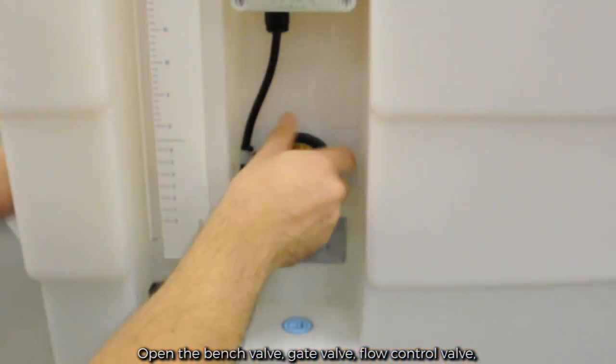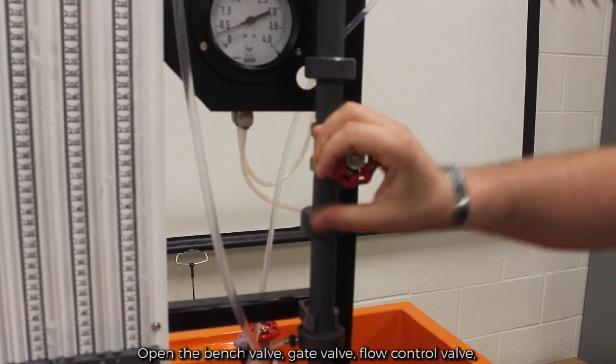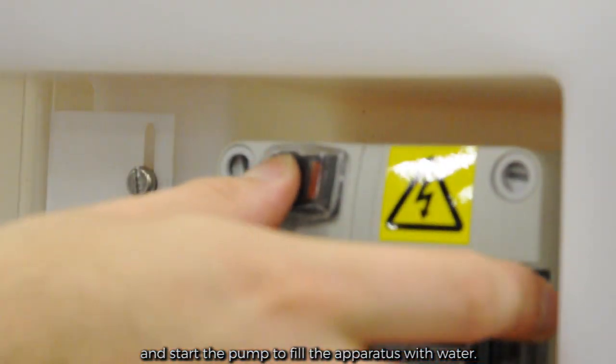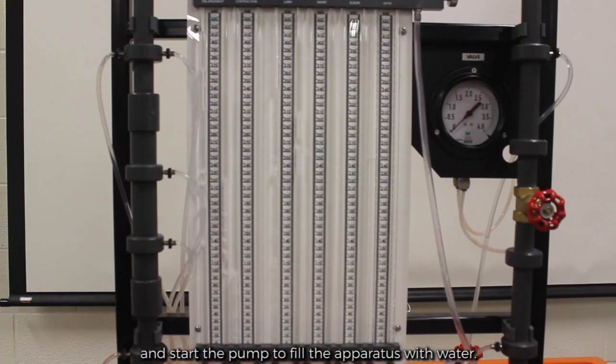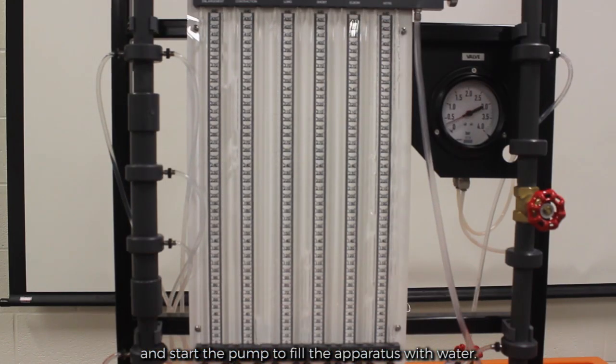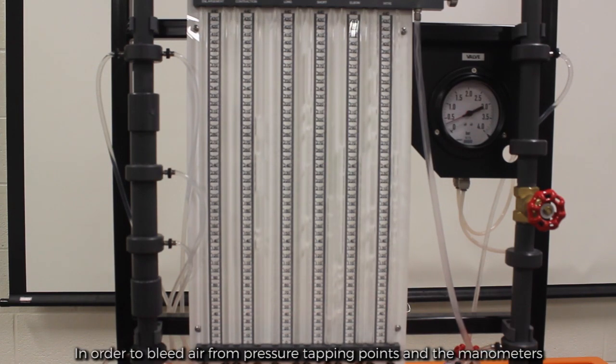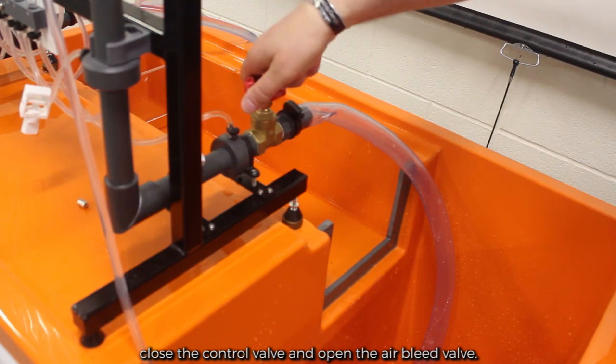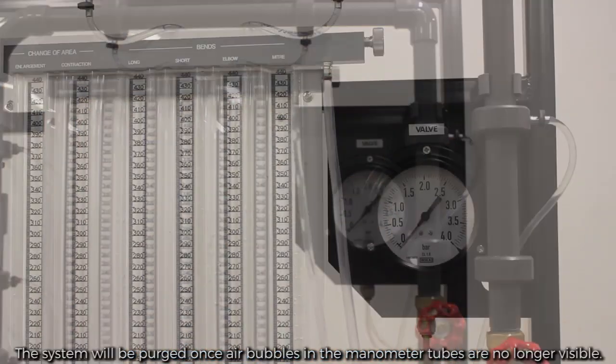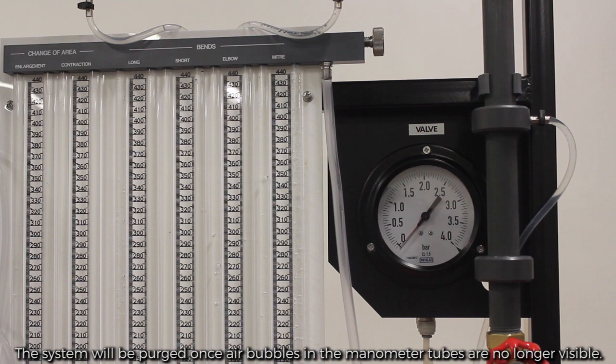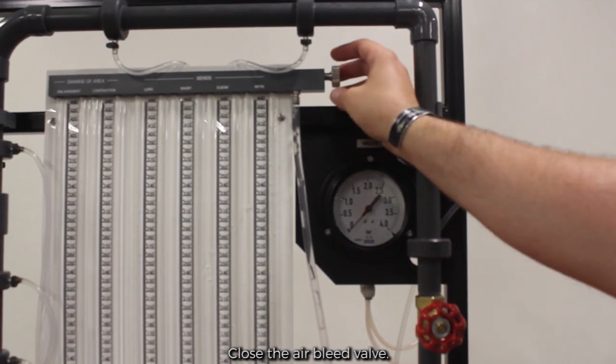Open the bench valve, gate valve, flow control valve, and start the pump to fill the apparatus with water. In order to bleed air from pressure tapping points and the manometers, close the control valve and open the air bleed valve. The system will be purged once air bubbles in the manometer tubes are no longer visible. Close the air bleed valve.